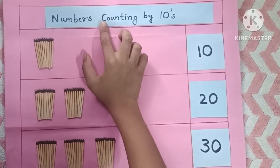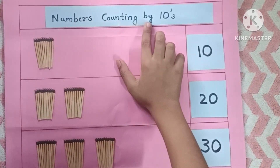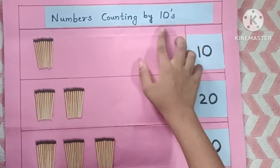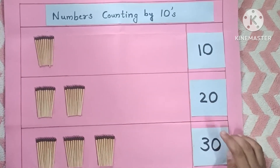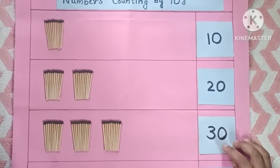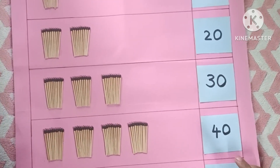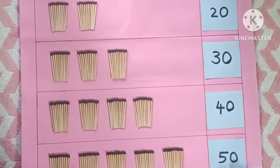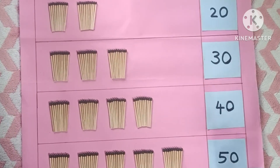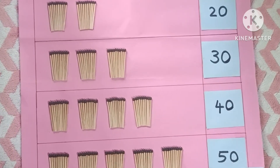Numbers counting by tens: 10, 20, 30, 40, 50, and so on. Thank you.